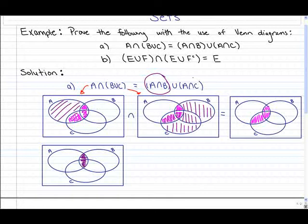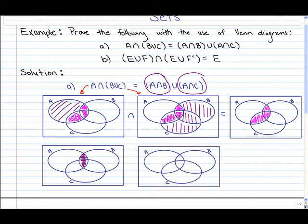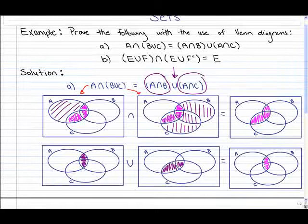Now we also draw a separate Venn diagram for A intersect C, which gives this shaded region. Then we want the union of those two Venn diagrams — basically what's shaded in one or the other. The first Venn diagram shows one region shaded, and the second shows another, so we shade both. The center was already shaded, so we don't shade it again. That represents the union of the two Venn diagrams.